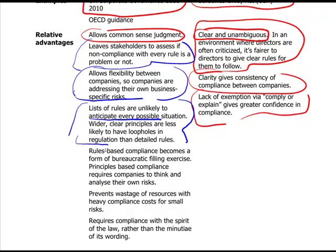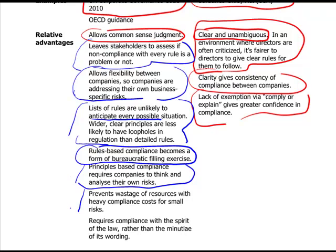With a principles-based approach and just guidelines, you can work within them to solve particular issues. Rules-based compliance becomes a bureaucratic filing exercise — just checking boxes and ticking a list. Principles-based compliance requires companies to think and analyze their own risks. There's also a wastage of resources in rules-based approaches, as trying to comply can be quite expensive and onerous. With a principles-based approach you only need to comply with the spirit of the law, rather than the exact wording.